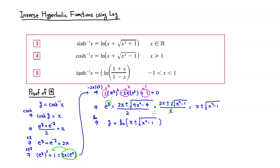We have a restriction on x for hyperbolic cosine because otherwise we can't find the inverse, so x is greater than or equal to 0. When taking the inverse, y must also be greater than or equal to 0. If we chose x minus square root of x squared minus 1, that value is less than 1, making the natural log negative — so we discard that. Therefore y, which is inverse hyperbolic cosine of x, equals natural log of x plus square root of x squared minus 1.